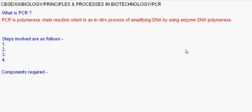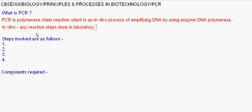PCR — polymerase chain reaction — is an in vitro process in which DNA is amplified into millions of copies using DNA polymerase. In vitro means any reaction steps done in a laboratory that normally occur inside living beings.